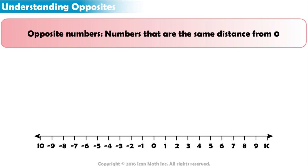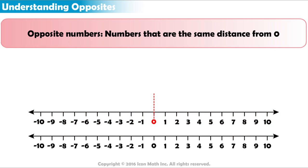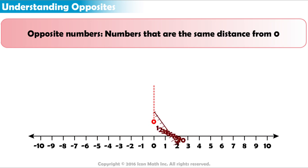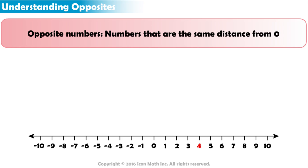If you took a number line and folded it in half at zero, each number will be next to its opposite. The opposite of 4 is negative 4, and the opposite of negative 4 is 4, because both 4 and negative 4 are 4 places away from zero.